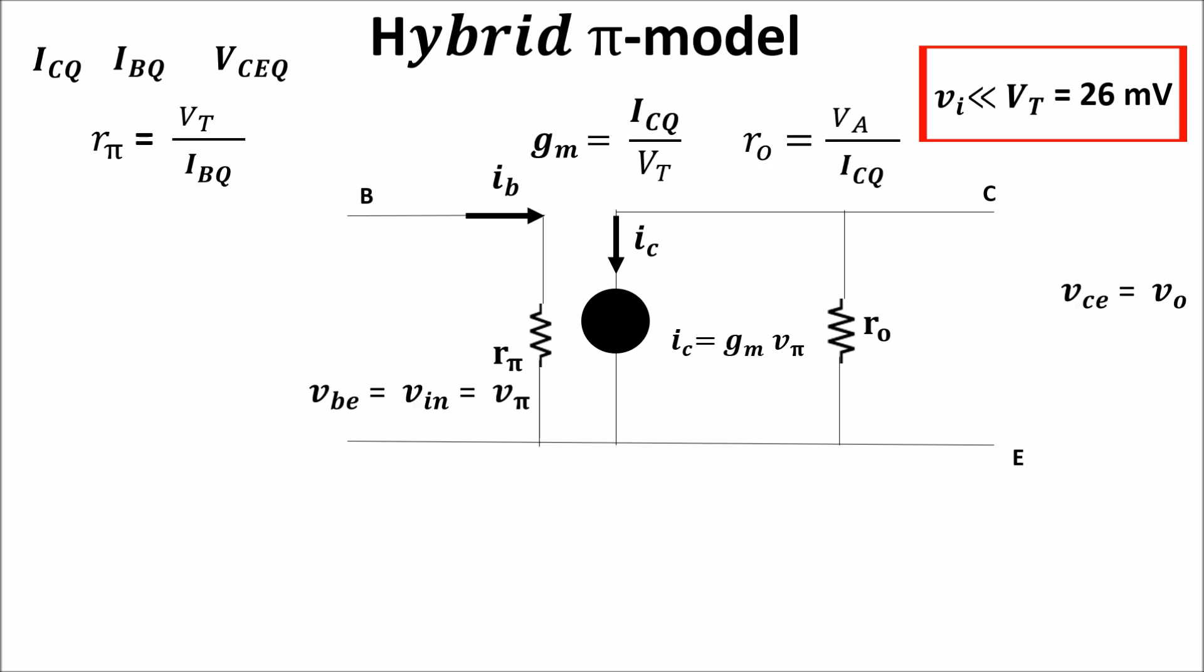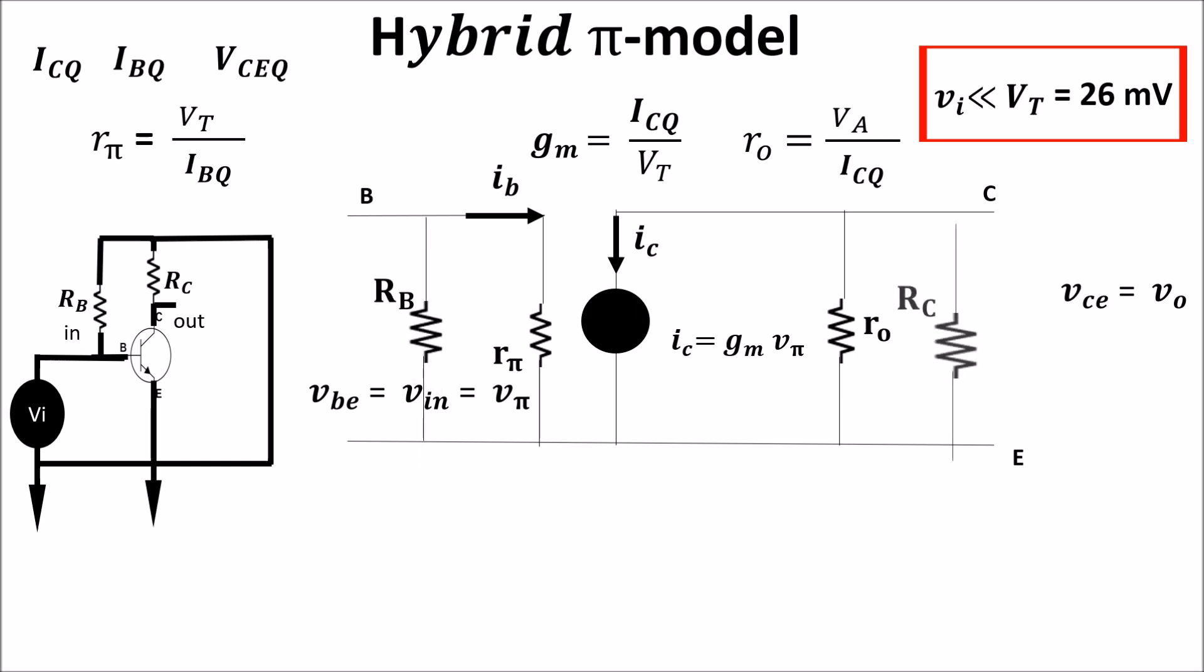So the output resistance is RO, which is the early voltage VA divided by the collector current in the quiescent point. Now that we have our BJT model we can remember the circuit and we can add the other elements as RB and RC.